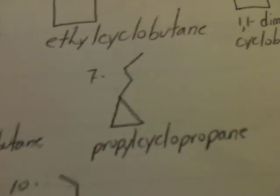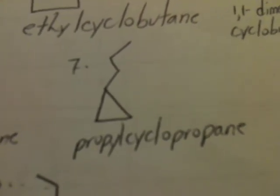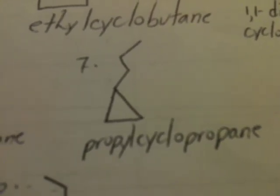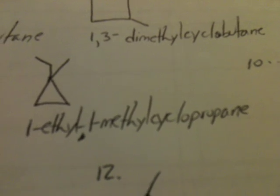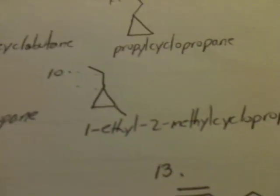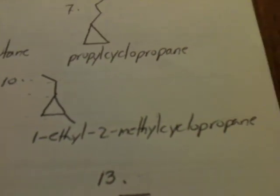So now we go down to the next smallest ring, which is a cyclopropane, which leaves 3 more carbon atoms free. So the first example is propylcyclopropane, followed by isopropylcyclopropane, 1-ethyl-1-methylcyclopropane, and 1-ethyl-2-methylcyclopropane.